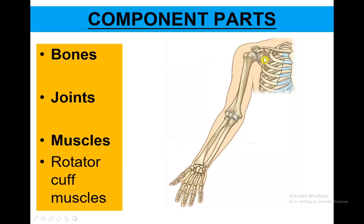The bones that belong to the upper limbs: for the shoulder girdle we have the clavicle and scapula; for the arm, the humerus; for the forearm, the radius and ulna; for the wrist, the carpal bones; the metacarpals in the palm; and the phalanges in the fingers.